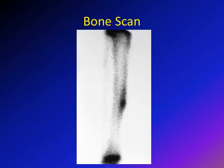Another imaging modality that can be used to detect osteoid osteoma is bone scan. On X-ray you mostly won't see the lesion — you'll see the sclerosis around it. On CT you can better delineate the lesion. On MRI you will see the edema. Bone scan will show the lesion as a hotspot, as seen here. Bone scan is one of the sensitive methods to detect osteoid osteoma.